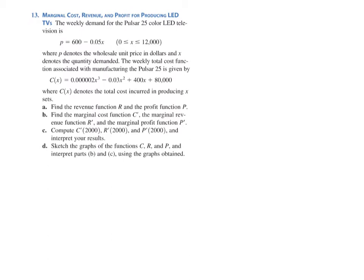looks like we're going to have a profit of $96 for that 2001 television set. So we found the revenue function, the profit function. We found all three of the marginal functions, marginal cost, marginal revenue, and marginal profit. And we computed the marginal values for a production of 2,000.